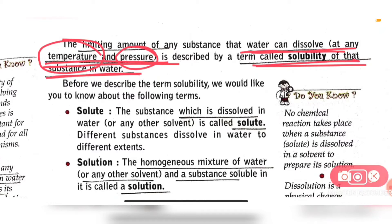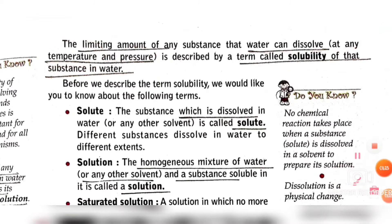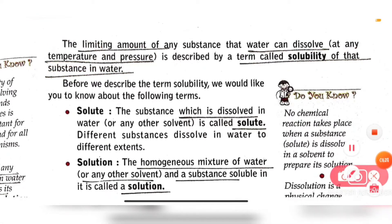So what is the meaning of solubility? It is the limiting amount of any substance that water can dissolve. Water cannot dissolve a limitless amount of any substance — there is always a limit.